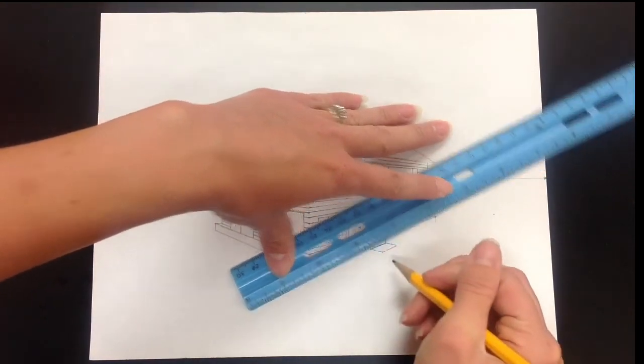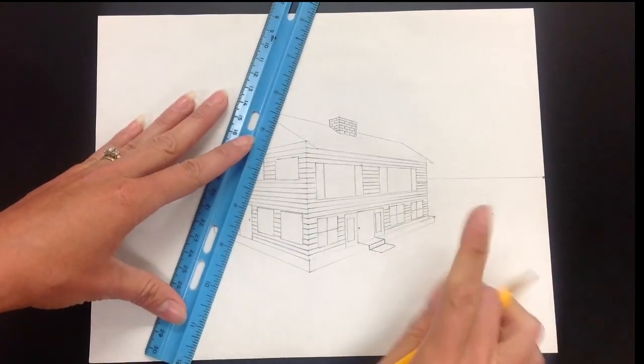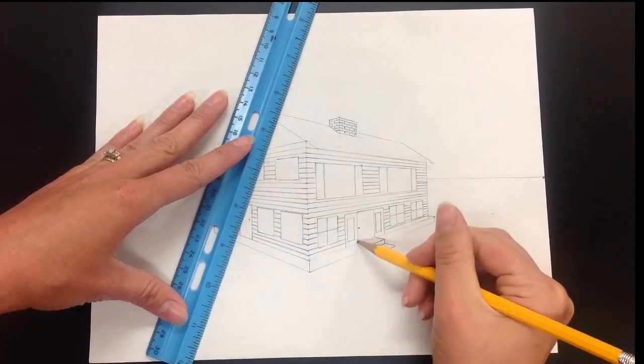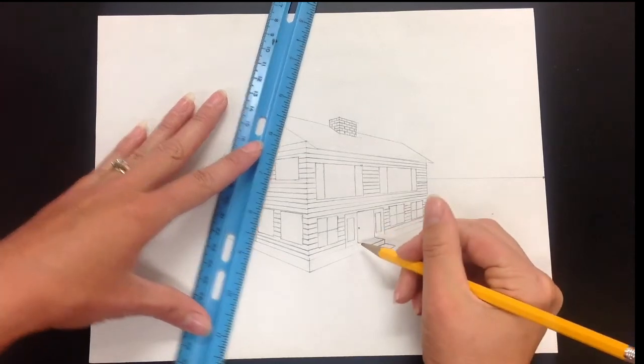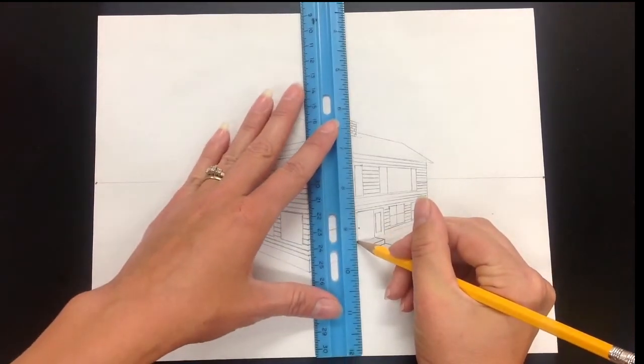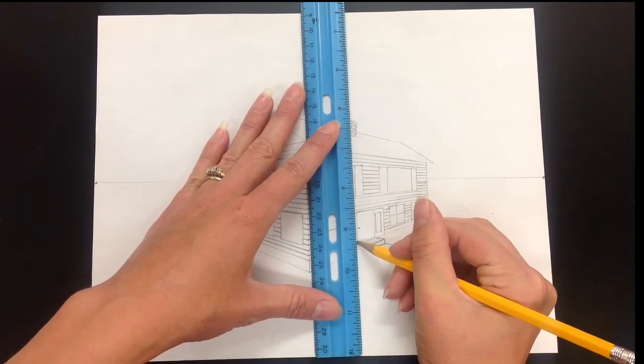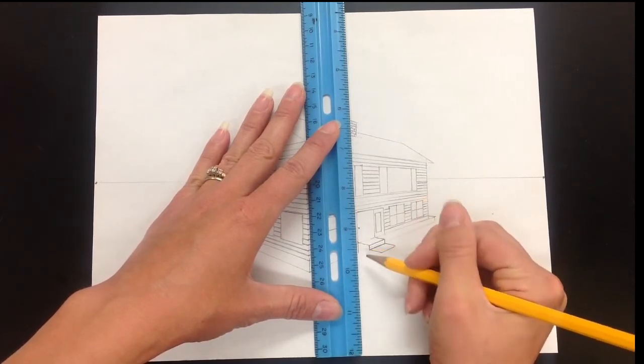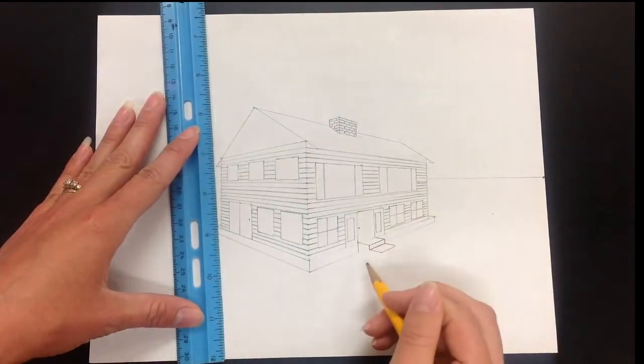After we have this line, our next step would be to add some elevation, except we're going to try to figure out first how far out we need to bring our stairs. So we're going to extend the line from our door, the left side of it, and bring it all the way down to your foundation line.